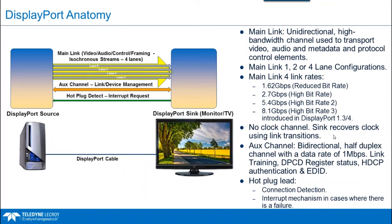All lanes must have the same link rate, and there are four link rates: reduced bit rate at 1.62 Gbps, high bit rate at 2.7, high bit rate 2 at 5.4, and high bit rate 3 at 8.1 Gbps — introduced in DisplayPort 1.3. Unlike HDMI, there's no separate clock channel; the sync recovers data using link transitions.